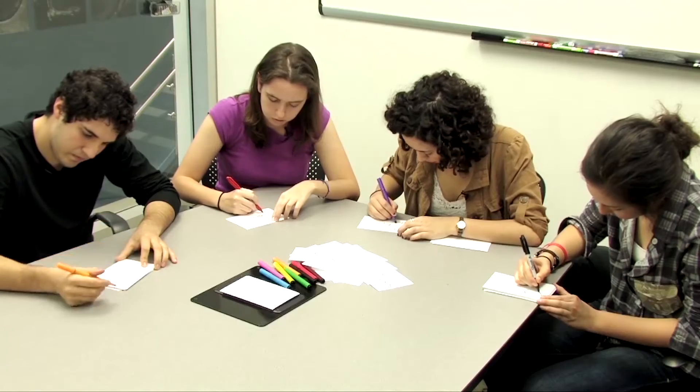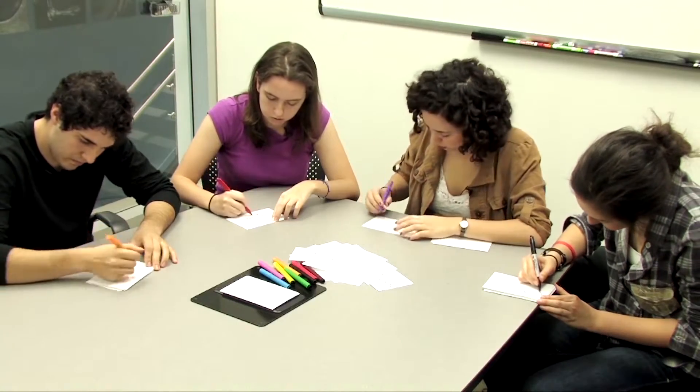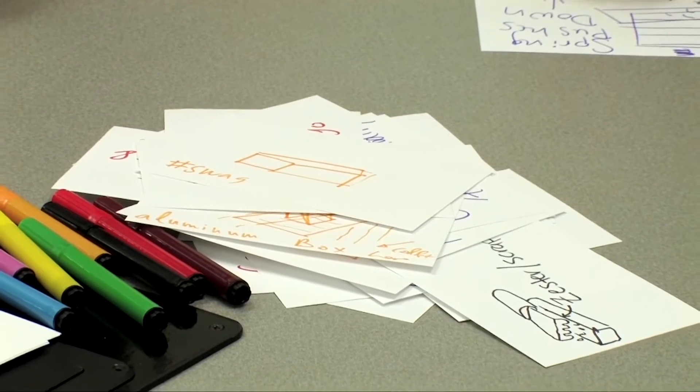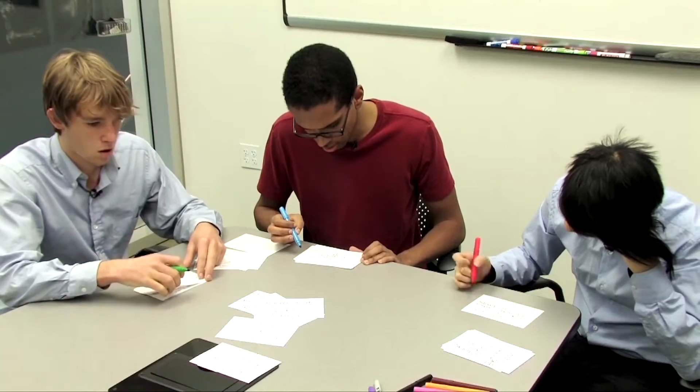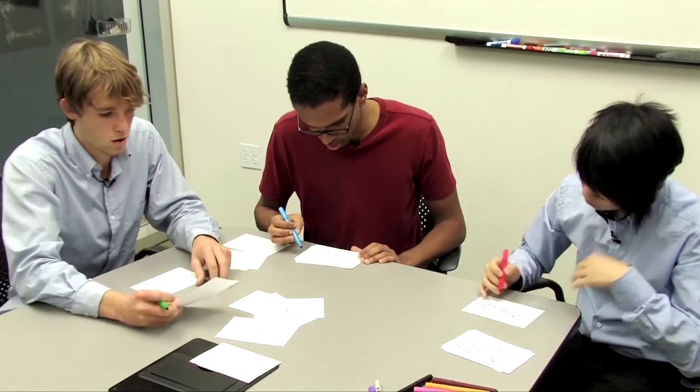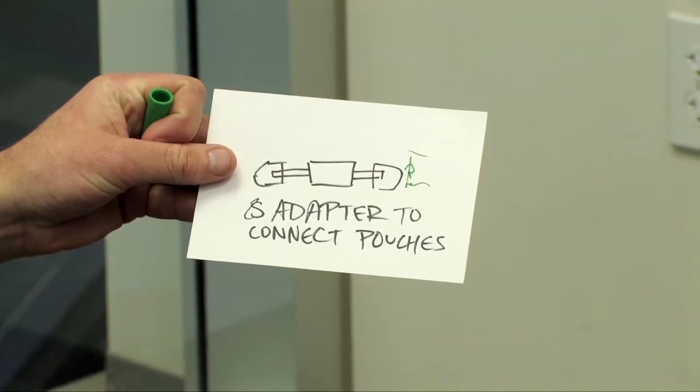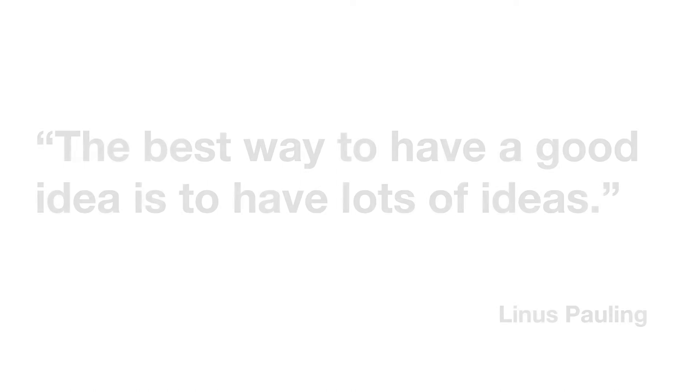The first rule of brainstorming is quantity over quality. In brainstorming, volume of ideas is paramount. Often teams will sit down for 15 minutes, they'll come up with a list of ideas that they've brainstormed, and they'll think they're done. Actually, these are going to be the worst ideas that the teams have come up with. What they really need to do is get these ideas out of their head so they can make room for the good ideas.